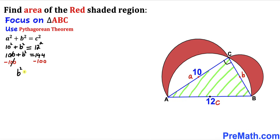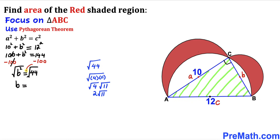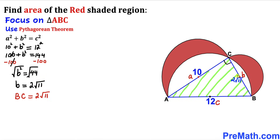B squared turns out to be 44. Taking the square root of both sides, B equals the square root of 44. Simplifying, square root of 44 equals 2 times the square root of 11. So side length BC turns out to be 2 times square root of 11.